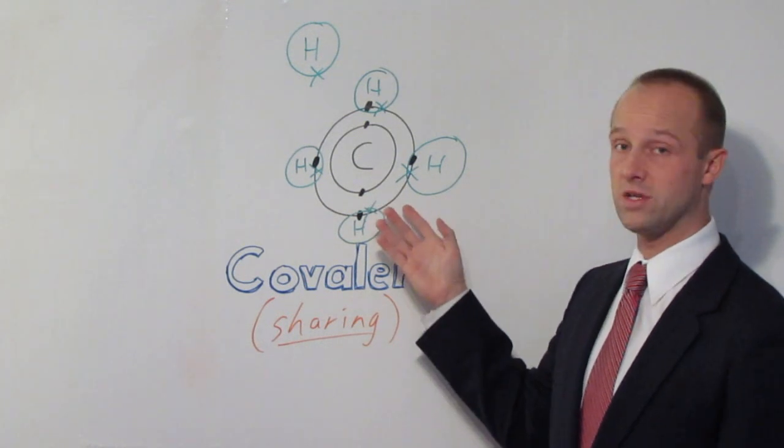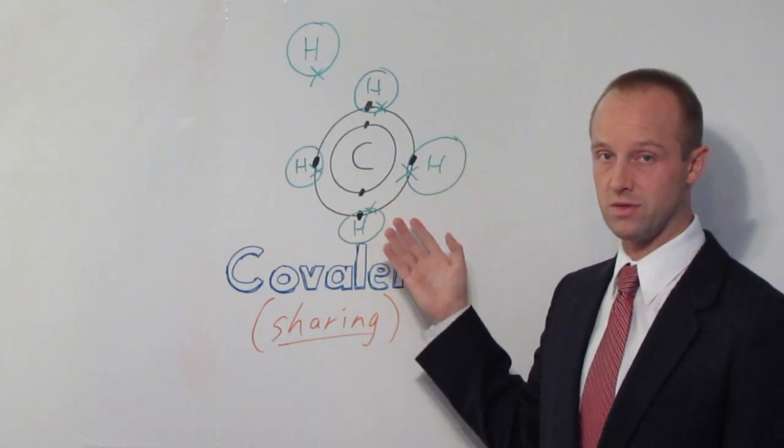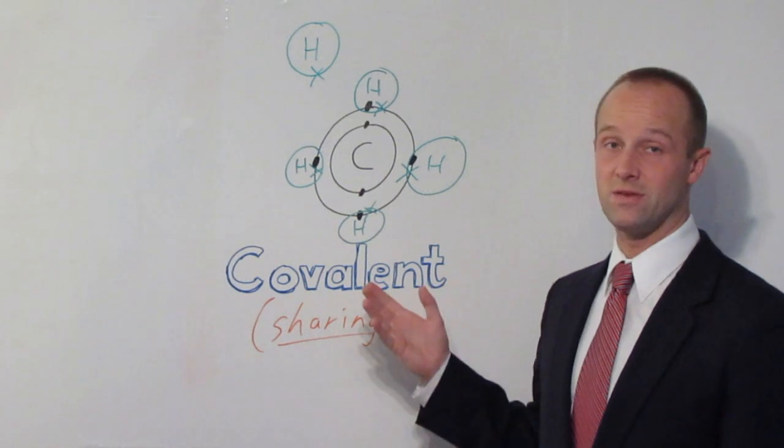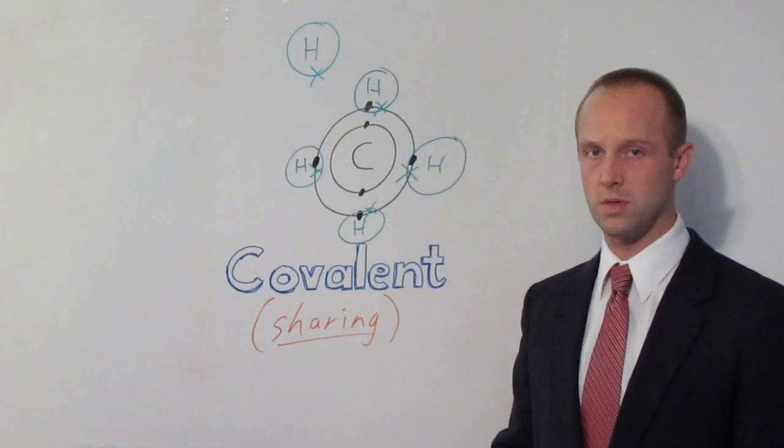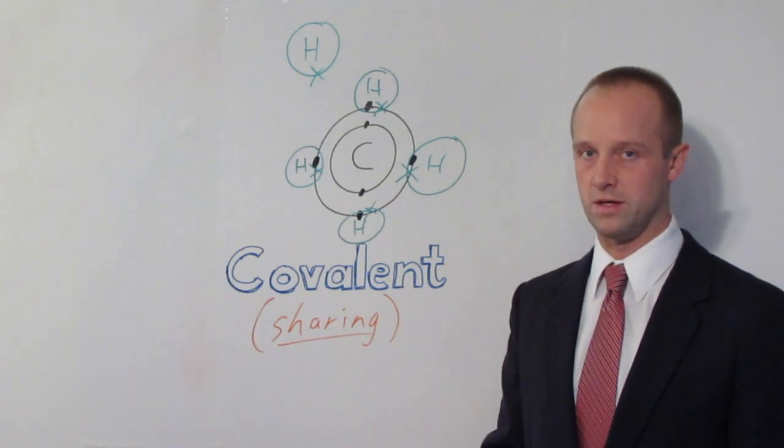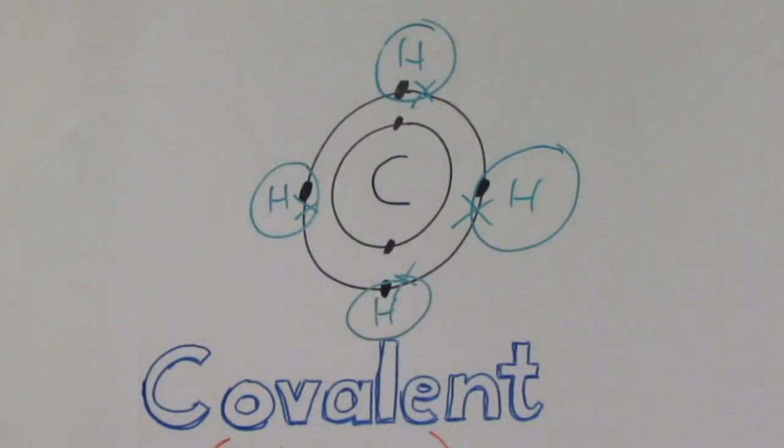So the carbon's got a complete outer shell, the hydrogens have got a complete outer shell each. The only downside is they're now stuck to each other. This incidentally is methane, one of the most common covalent molecules which you're going to see. Notice that each covalent bond is a pair of shared electrons.